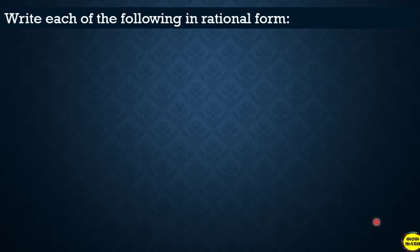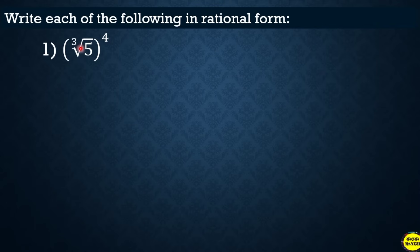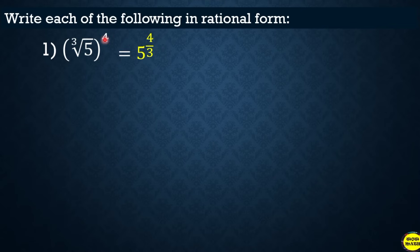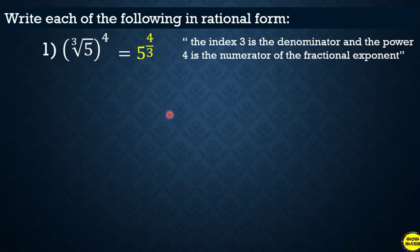Now let's go back from radical to exponential form. First example: the cube root of 5, raised to the 4th power. The base is 5 — the number inside the radical. The index 3 becomes the denominator, and the power 4 becomes the numerator of the fractional exponent. So this equals 5 raised to 4 over 3. Remember: the index is the denominator and the power is the numerator.